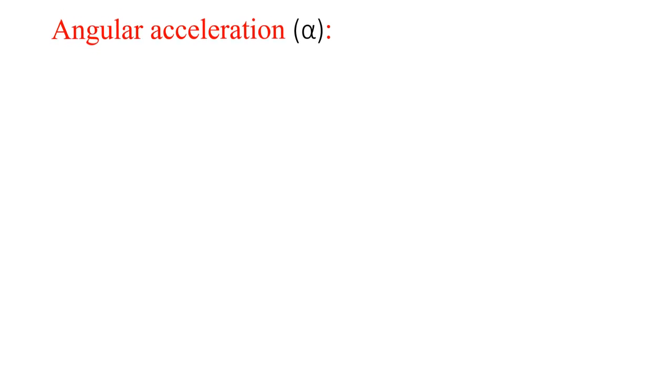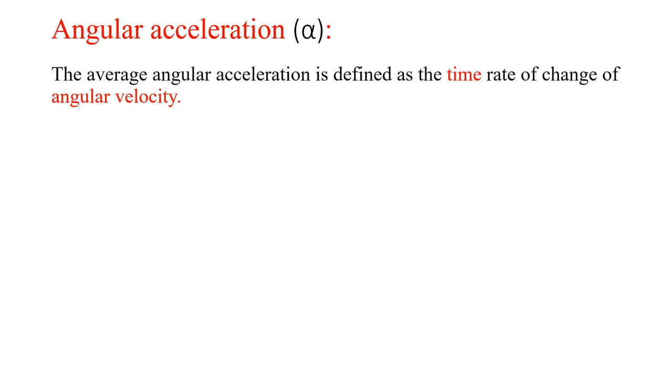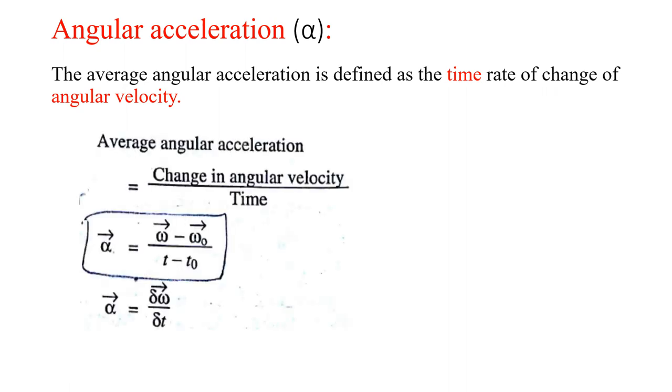Similarly, angular acceleration which is indicated by alpha. So what is angular acceleration? The average angular acceleration is defined as the time rate of change of angular velocity. Acceleration is the rate of change of velocity with respect to time.